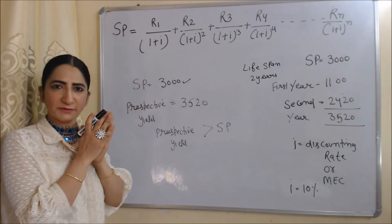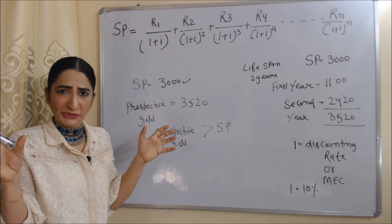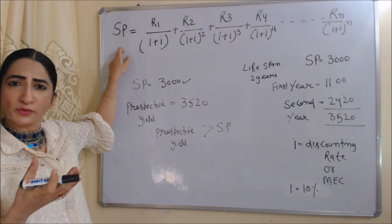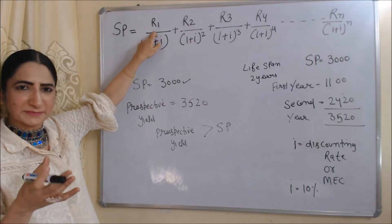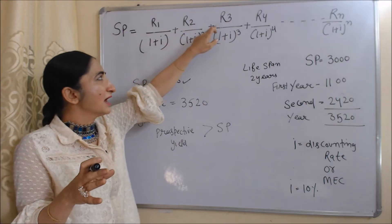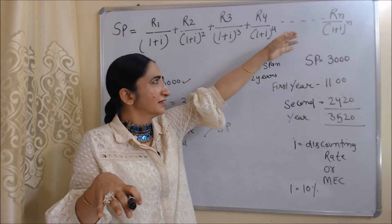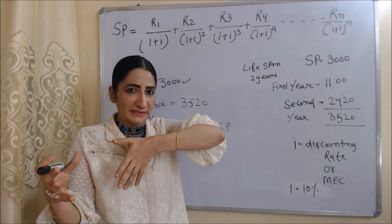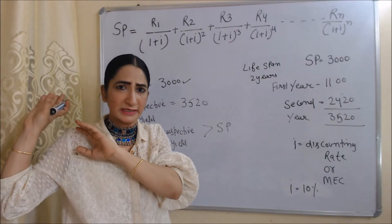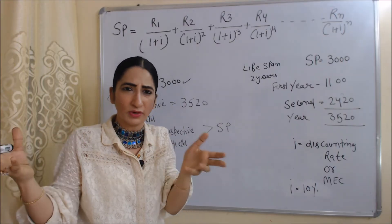With the help of this formula, we will see how marginal efficiency of capital makes prospective yield and supply price just equal to each other. In this formula, SP is the supply price — the cost of producing the new asset. R1 is the expected return from the asset in the first year, R2 in the second year, R3 in the third year, R4 in the fourth year, and so on up to RN depending on the lifespan. The total of R1, R2, R3, R4 will be called prospective yield — total expected return from the asset during its whole life.